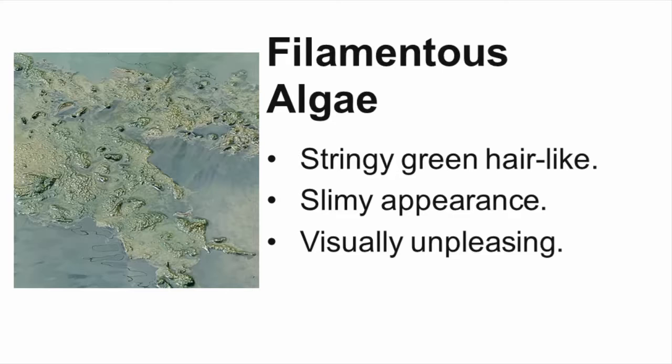Filamentous algae, a dark green plant that resembles stringy hair, is a very common problem in Pennsylvania ponds. This type of algae actually begins growing on the bottom and then floats to the surface, forming thick mats and even gas bubbles. Its slimy appearance is aesthetically unpleasing to many pond owners, but it is an important food source for small fish.